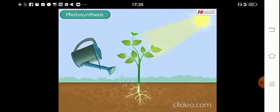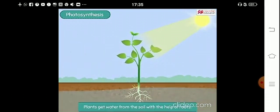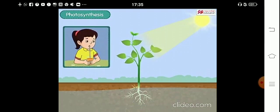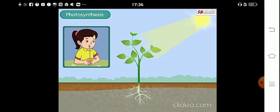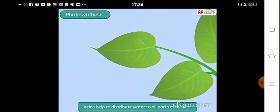The next important thing needed by the plant is water. Plants get water from the soil with the help of roots. Just like the straw that you use to drink juice, the roots and stems of a plant have narrow tubes that help carry water from the roots all the way up to the leaves. The veins in the leaves help to distribute this water to all the parts of the leaf.